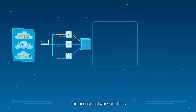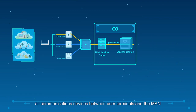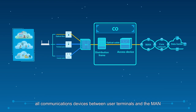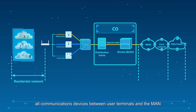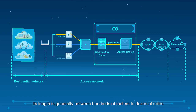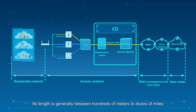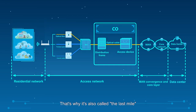The access network contains all communications devices between user terminals and the main network. Its length is generally between hundreds of meters to dozens of miles. That's why it's also called the last mile.